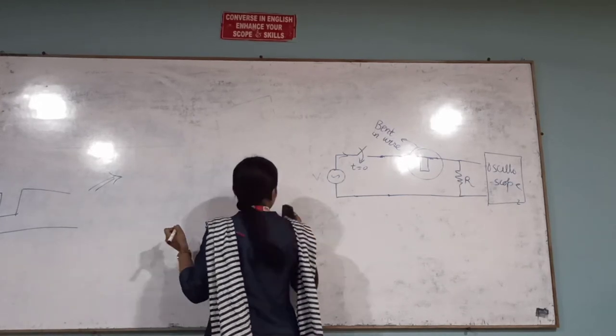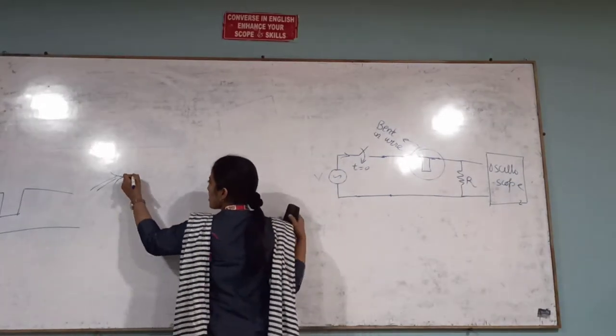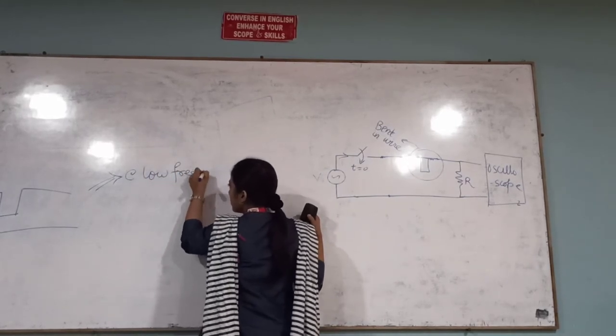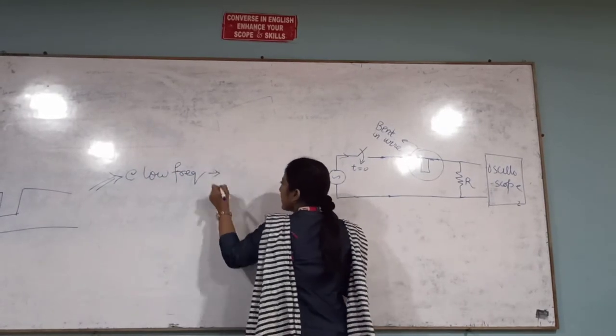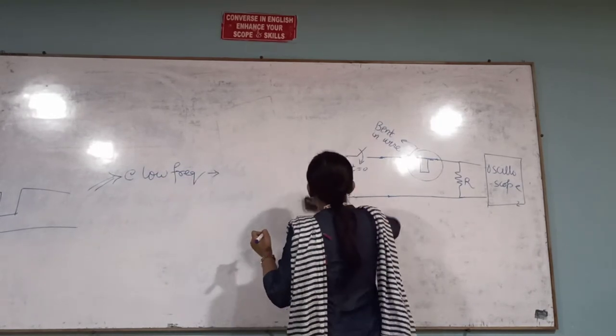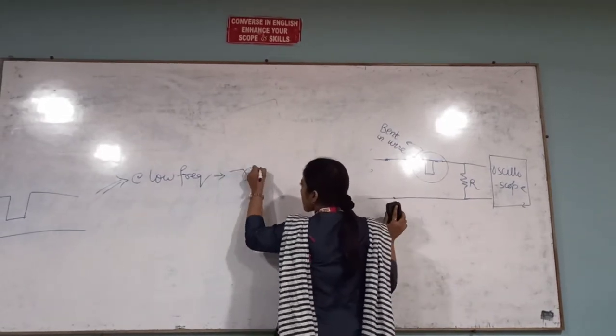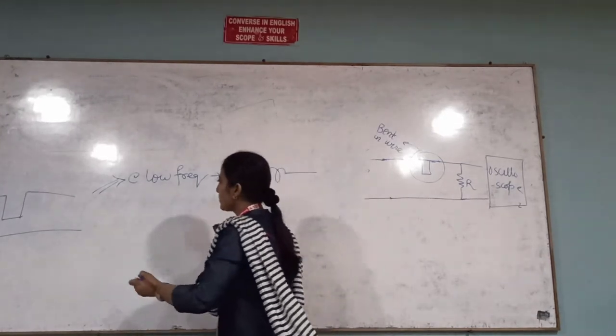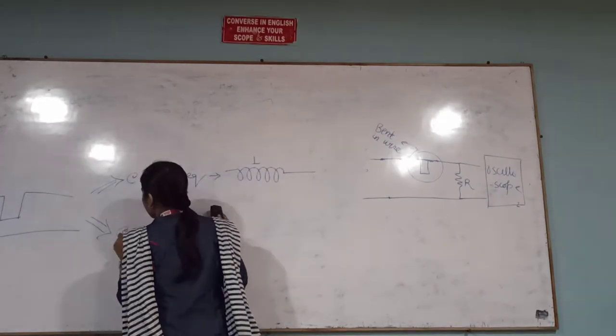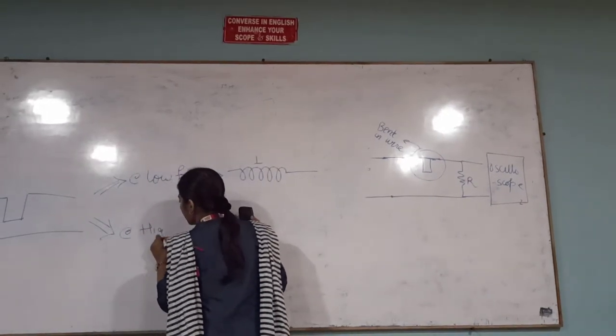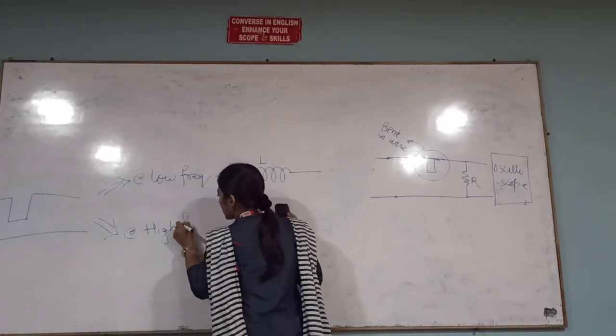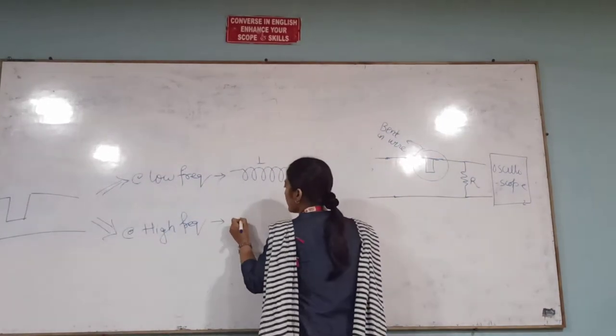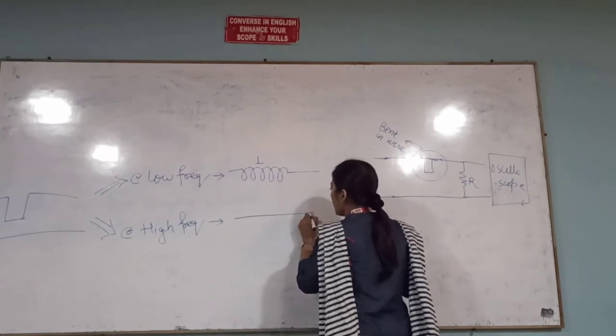So at time zero when this circuit will close, for circuit theory people they will consider this bend as a straight wire only. This bend does not differ. But this wire that has some bend here, how do you consider? If we are having low frequency of the source, what do you consider? Then you consider it as an inductor.